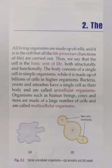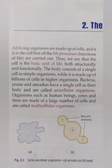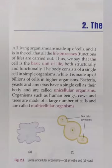What are unicellular organisms? Organisms like bacteria, yeast and amoeba are made up of just a single cell and they are called unicellular organisms. Whereas organisms such as human beings, cows, goats, trees, lions and tigers are made up of a large number of cells and they are called multicellular organisms.